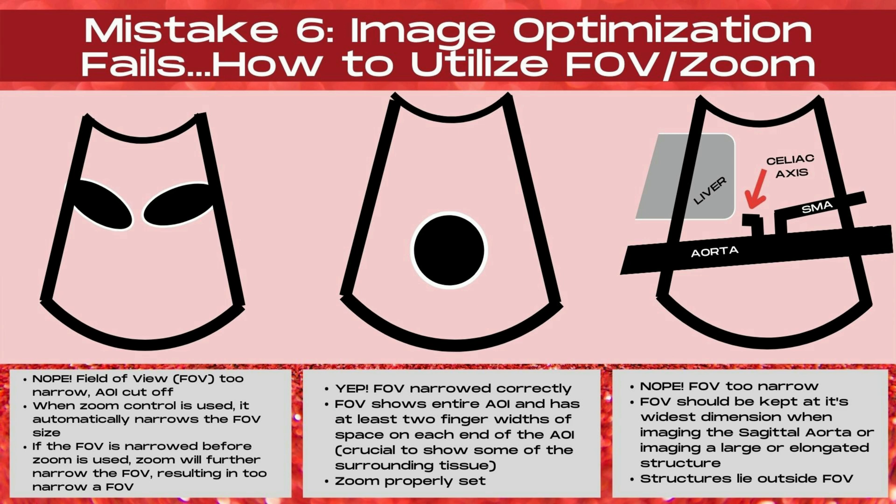In the middle image, the field of view is narrowed correctly — it shows the entire transverse aorta with at least two finger widths of space on each end, showing surrounding tissue. The zoom is set correctly so the image is not blurry and the aorta is located about three quarters of the way down. Showing surrounding tissue is crucial — without it you can miss things like a mass hanging off the side of the ovary or free fluid in the region, both important diagnostic clues.